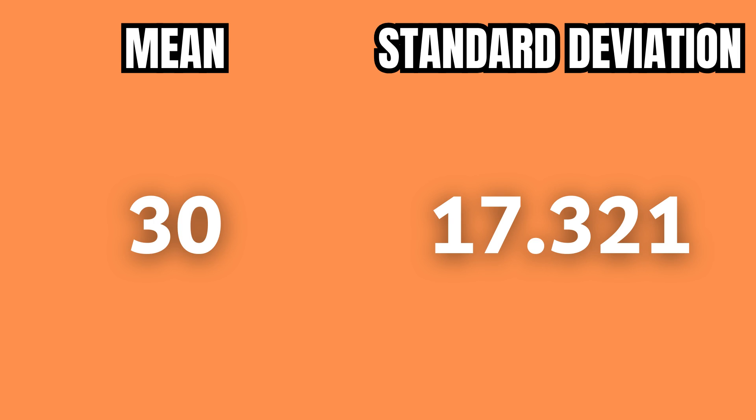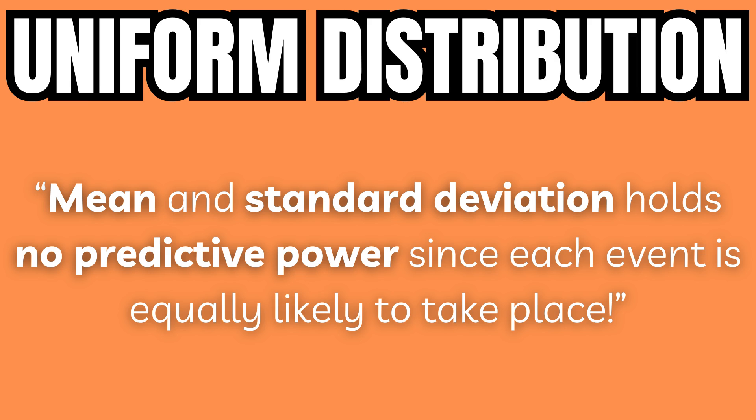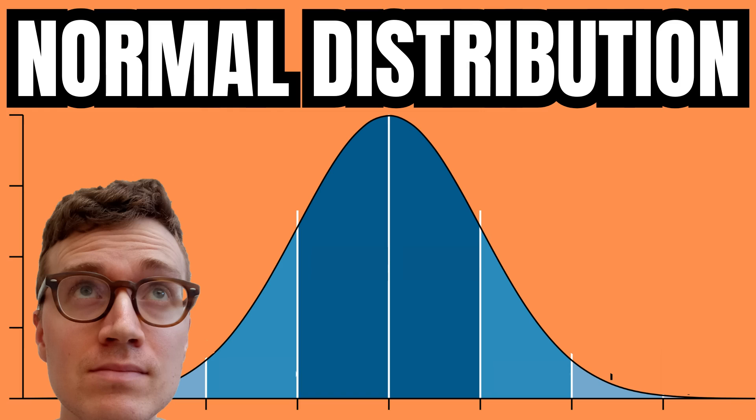However, it's worth noting that the mean and standard deviation for uniform distribution holds no predictive power. This is because all events are equally likely to occur, unlike, for example, a normal distribution where most events are clustered around the mean. If you want to learn more about statistics, check out this playlist.